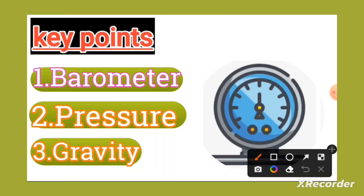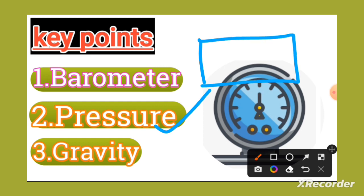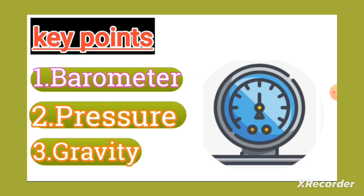The next point is pressure. Suppose this is a particular area and we are applying force at that area — this is known as pressure. For example, if you want to push a friend out of your way, you apply some effort to move them. That effort is pressure.